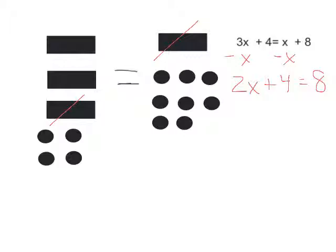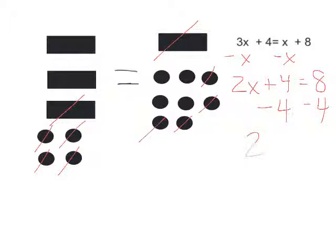Now to get just x's on the left, I would cross out 4 circles on the left and 4 circles on the right. In my equation I would show that crossing out is the same as subtracting, so I subtract 4 on both sides. That leaves me with 2x's on the left and 4 circles on the right.